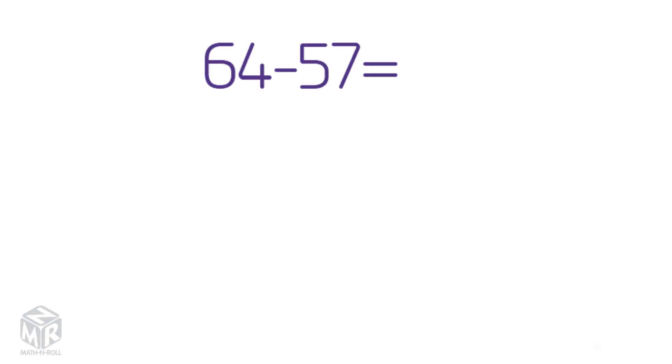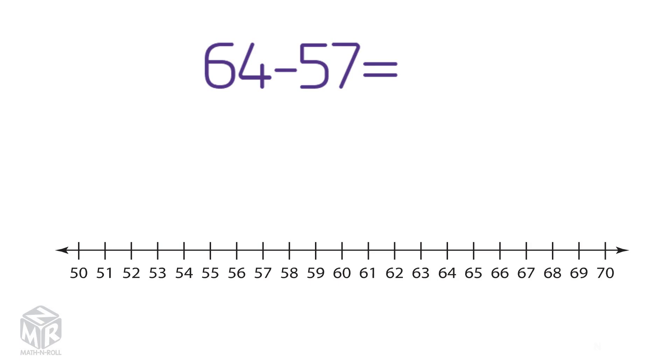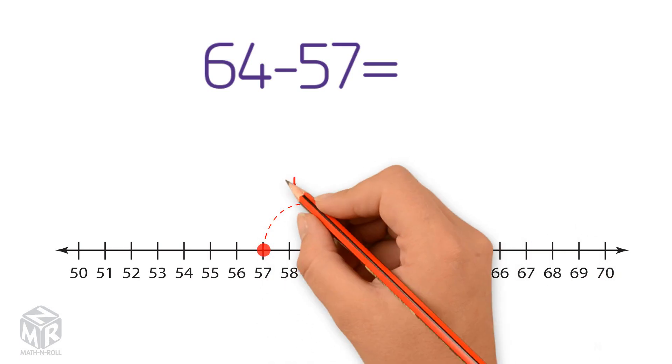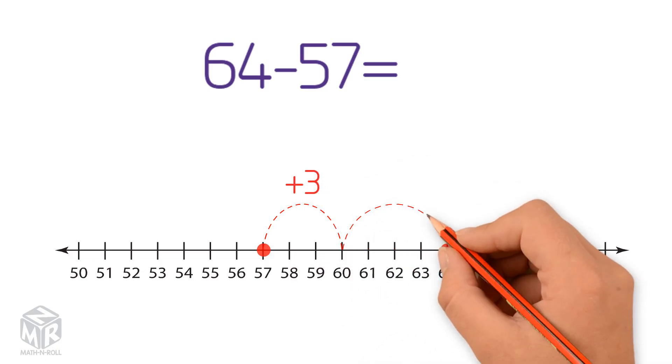Let's try another example. 64 minus 57. Let's draw it out. Start at 57 and count up 3 to 60. Then count up 4 more to 64. 3 plus 4 equals 7. So 64 minus 57 equals 7.